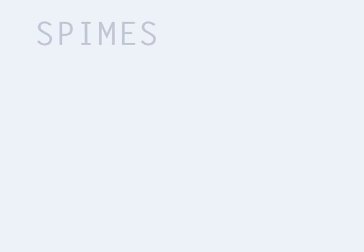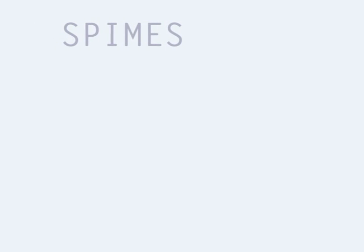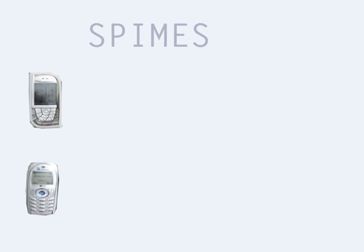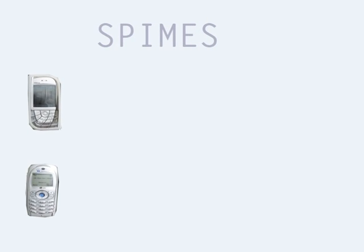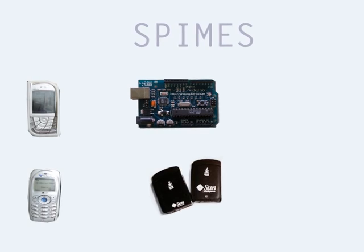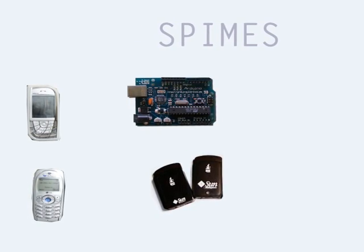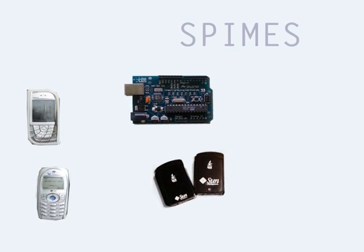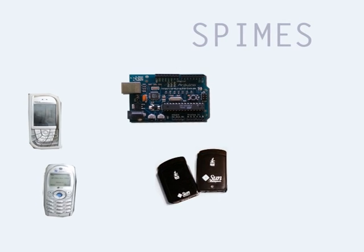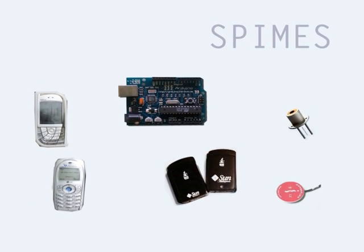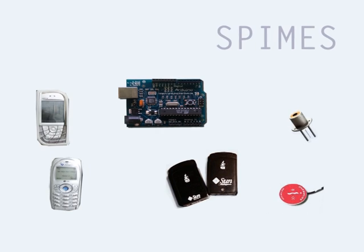Nowadays, we already do have some rudimentary Spimes. For example, your mobile phone is one, devices like Arduino and Sunspot with appropriate hardware and software configurations, and also any kind of sensor that is nowadays available, such as industrial sensors for instance.